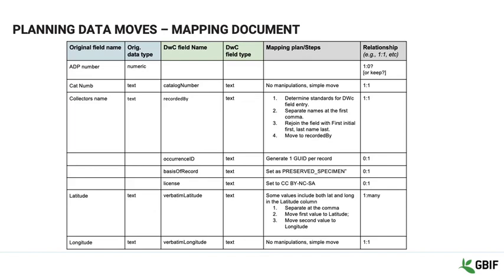This is an example of what a mapping document looks like. Notice that not only do we document the relationship, we also articulate to the best of our knowledge what should be done to the data.